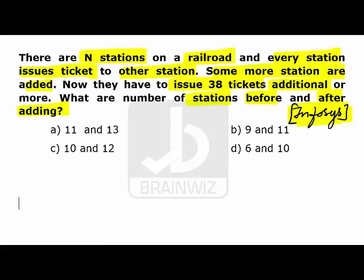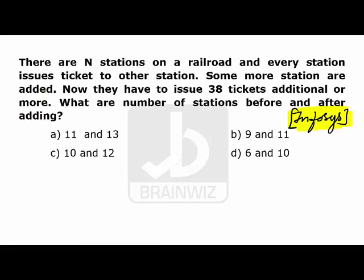Let's recollect that tickets fall under permutations. The concept of permutation says that if you have N stations, then the number of tickets is NP2. So using this concept of permutation, we can do this question easily from the options.